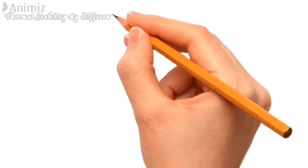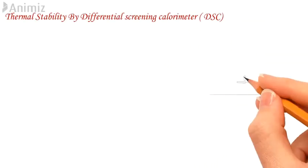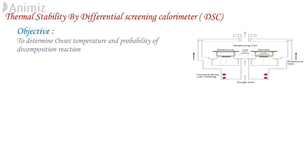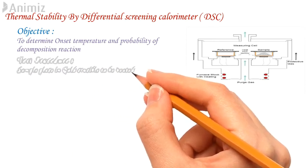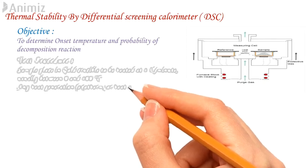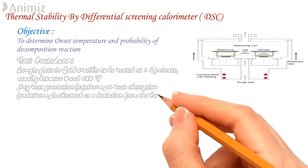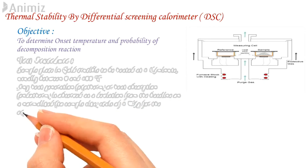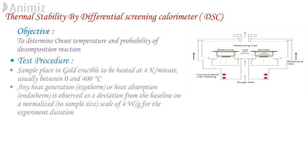Determination of thermal instability using differential scanning calorimetry. Test procedure: In this test, 5-20 mg of sample is sealed in a high-pressure gold-plated single-use crucible. The sample crucible together with a reference crucible is then heated at 4K per minute, usually between 0 to 400 degrees Celsius, although the temperature range may vary based on the need. Any heat generation, i.e., exotherm, or any heat absorption, i.e., endotherm, is observed as a deviation from the baseline on the normalized scale for experiment duration.